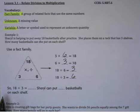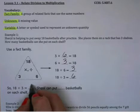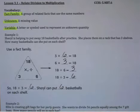So to solve example 1, we have that 18 divided by 3 equals 6. So Cheryl can put 6 basketballs on each shelf.